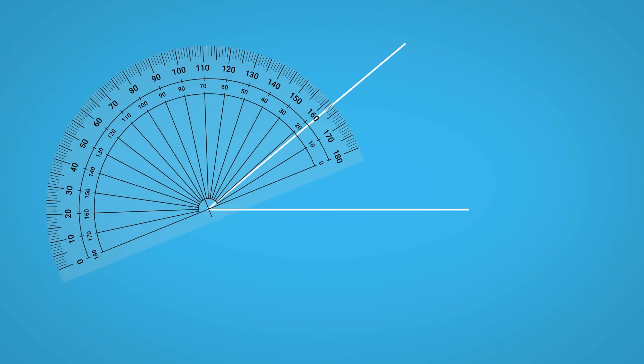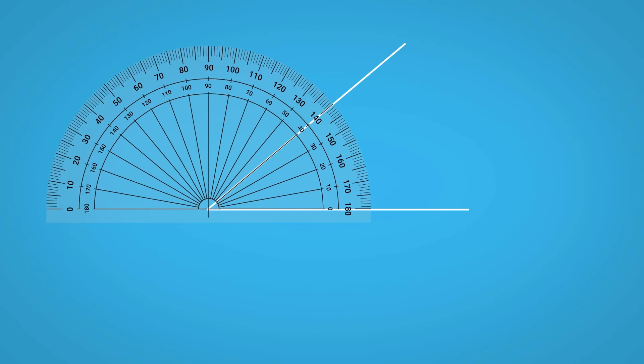Now, in order to measure an angle, the centre of the protractor should be placed on the vertex, the point where the two lines or rays meet. Next, the baseline should be aligned with either of the two lines of the angle in order to indicate 0 degrees.